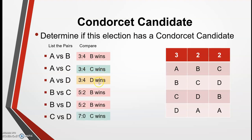For A versus D: A is ranked above D in column one, so A gets those three votes. D is ranked above A in column two, so D gets those two votes. D is ranked above A in column three, so D gets a total of four votes and A gets three — D wins. We can repeat this process for B versus C, B versus D, and C versus D. We see that B beats C, B beats D, and C beats D.